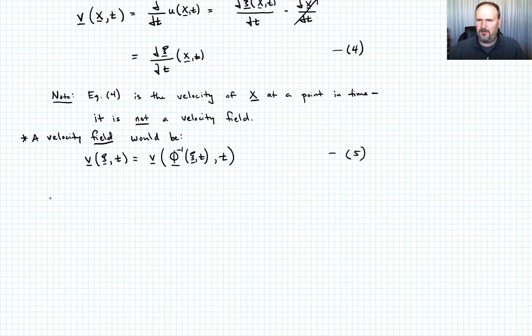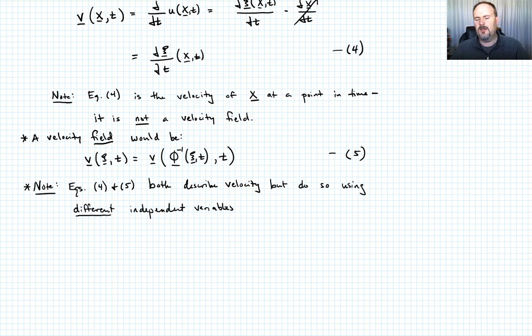I want you to note something. Compare equations four and five. Equations four and five both describe velocity, but they're doing it using different independent variables. Equation four uses an independent variable that's the material point X and equation five uses an independent variable that is C. So in general, even though they are both describing the velocity, they're not going to, in general, be the same functions.